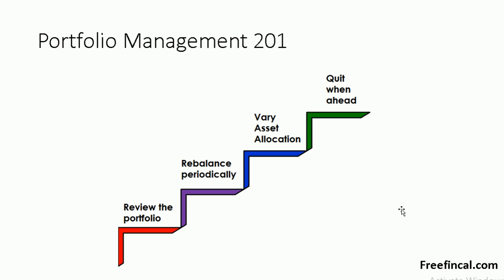You can rebalance once a year initially, and as you approach the goal, you can do it more periodically. Asset allocation is not a constant in time — you should vary it gradually every few years, and as you approach the goal, you should change your asset allocation from an equity-heavy portfolio to practically zero equity gradually.